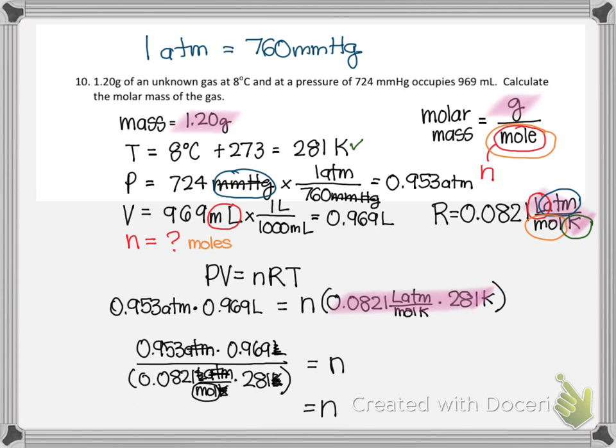So I have 0.953 divided by 0.969. Why? Why did I divide? Maybe you were listening, and you're like, why are you dividing? 0.953 times, sorry, 0.969 divided by parenthesis 0.0821 times 281, close parenthesis. And I get a small number. I get 0.04002, so I'm only going to keep the three significant figures. And the number after the zero is a two, so it stays.